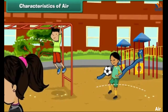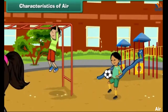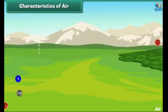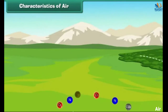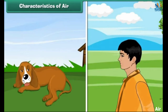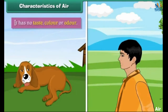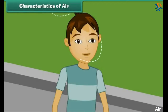Characteristics of Air: We are surrounded by air. Air is a mixture of gases and other particles. It is essential for the survival of living things. All living things breathe in and breathe out air. It has no taste, colour or odour. We cannot see it but we can feel it.